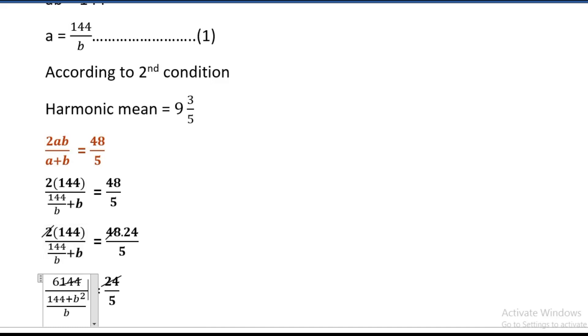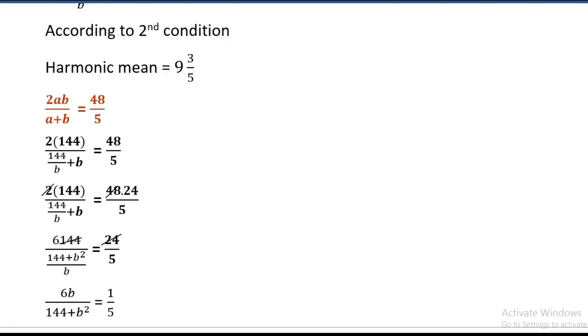24 times 24 equals 24 divided by 5. So 24 equals 24 divided by 5. 6 times 144, so divided by b, 6b divided by 144 plus b squared equals 1 divided by 5.